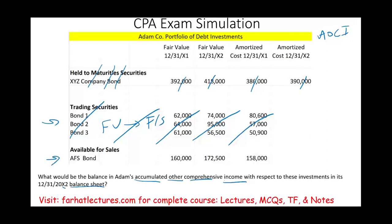For available-for-sale securities, the answer is yes — they're reported at fair value, but the fair value adjustment goes to comprehensive income, which flows through the balance sheet. We have one available-for-sale bond with an amortized cost of 158,000 in the prior year, and now the value of that security is 172,500. The accumulated adjustment from year X1 to year X2 reflects the difference in value: we went from 158,000 to 172,500, which is an increase in value of 14,500.